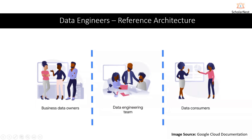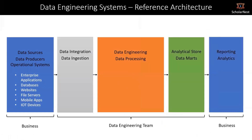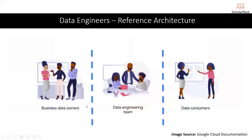Data engineering team's responsibility is to collect data from the owners, prepare it, and meet the expectations of the data consumers. To understand this in more detail, we look at the blocks of different components of this flow. We go from left to right on this diagram, and that represents the flow of data. On the leftmost side, you saw in the previous diagram the data engineering team in the center, with data owners on the left and consumers on the right.